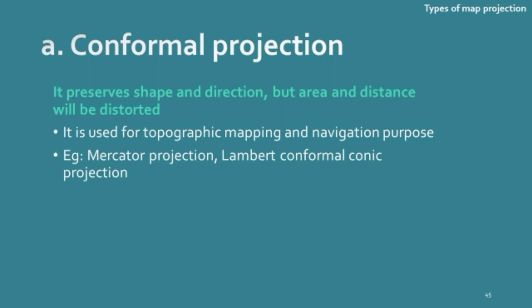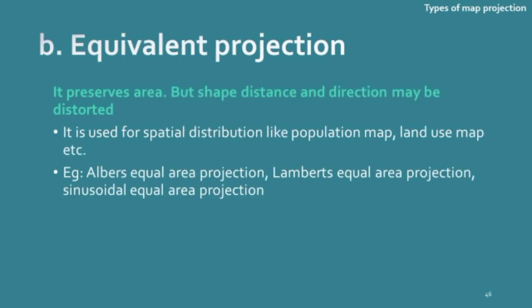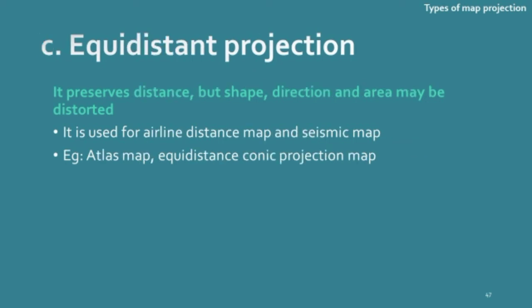You can use conformal projections like Mercator projection when you need to calculate only the shape and direction of an area, not its area and distance. The second is equivalent projection, which preserves area but distorts shape, distance and direction. It is used for spatial distribution like population maps and land use maps — the area will be correct but all other data will be distorted. The third is equidistant projection, which as the name indicates only preserves distance while all other properties are distorted. As distance is correct, it is used for airline distance calculation and seismic map calculations — examples include atlas maps and equidistant conic projection.